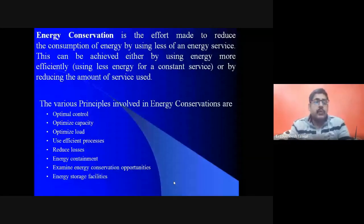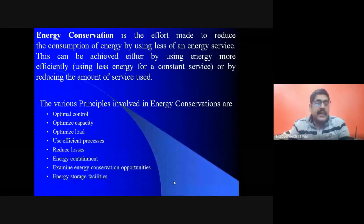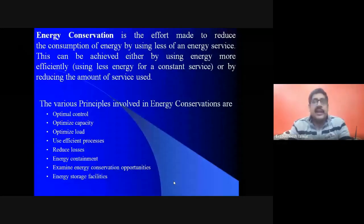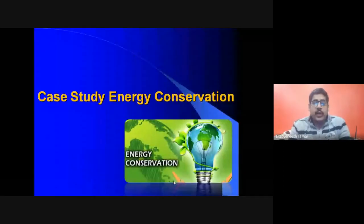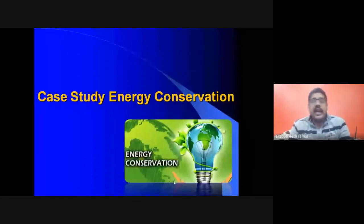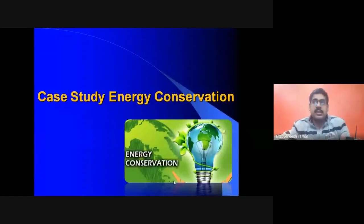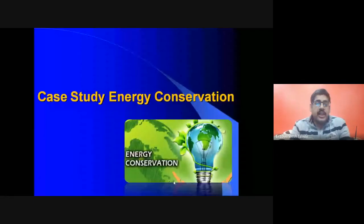The various principles involved in energy conservation are optimal control, optimization, capacity optimization, load-use efficient processes, reduction of losses, examining energy conservation opportunities, and energy storage facilities. To illustrate these principles, I will share a case study of an energy audit I conducted at a grid station, showing how energy conservation measures can save energy.